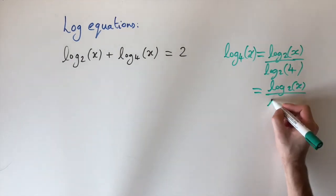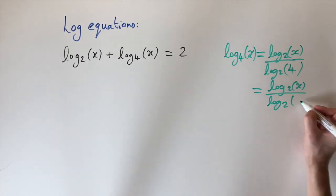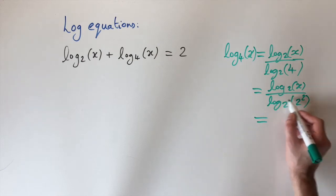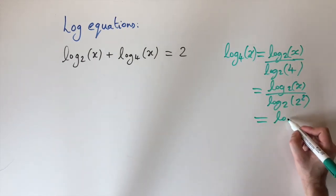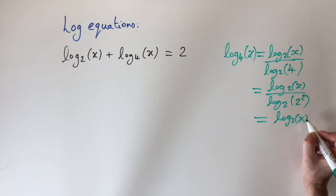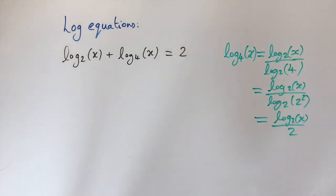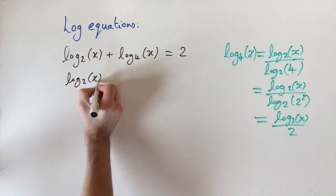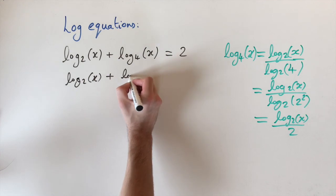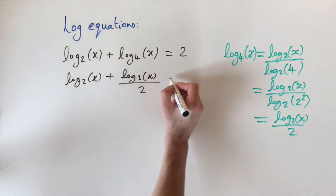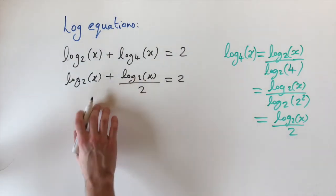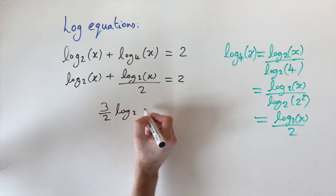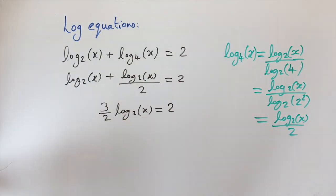Since 4 equals 2 squared, log base 2 of 4 equals 2. So log base 4 of x simplifies to log base 2 of x divided by 2. Substituting in, we get log base 2 of x plus log base 2 of x divided by 2 equals 2. Collecting terms gives 3/2 times log base 2 of x equals 2.